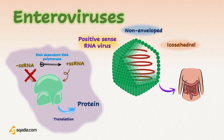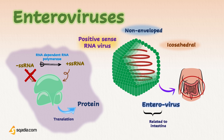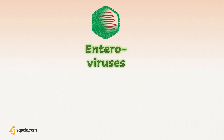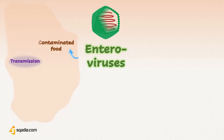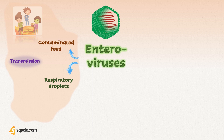Enterovirus is associated with several human diseases and mainly infects the intestine, hence named Enterovirus, where 'entero' means related to intestine. Enteroviruses are highly contagious and are transmitted mainly through two routes: consumption of contaminated food, water, saliva, etc., and by the respiratory tract — either air droplets or through coughing.